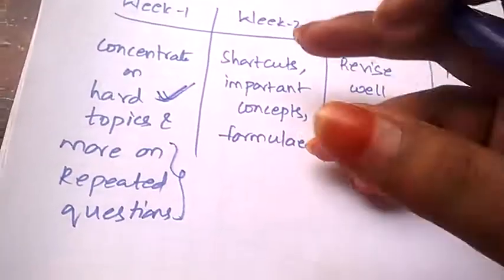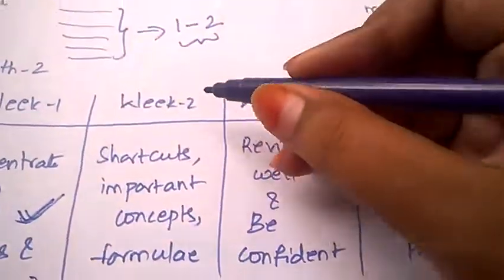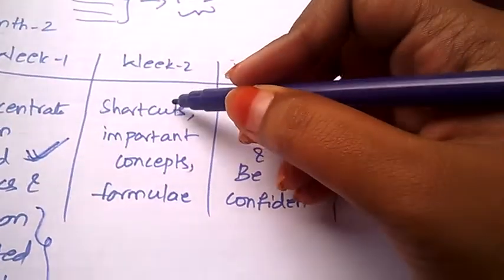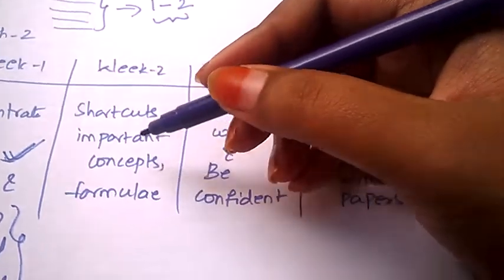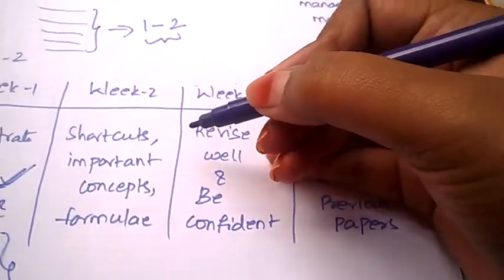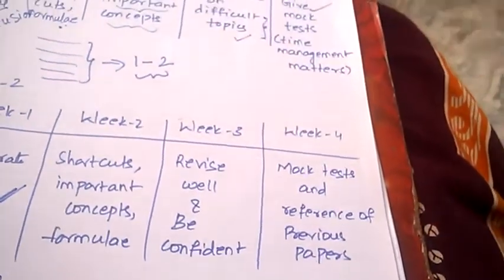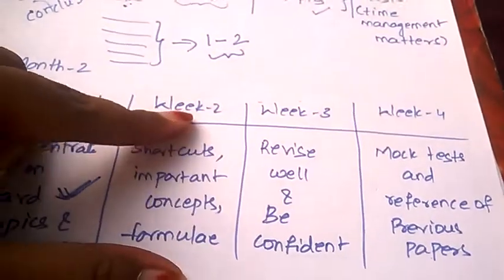In Week 2, what you need to do is again revise the important concepts, shortcuts, and formulae. It is just a revision. We have already done with it, but we are just revising it again because we should remember it and we should memorize it fastly and quickly during the exam, so we are repeating the same thing here.